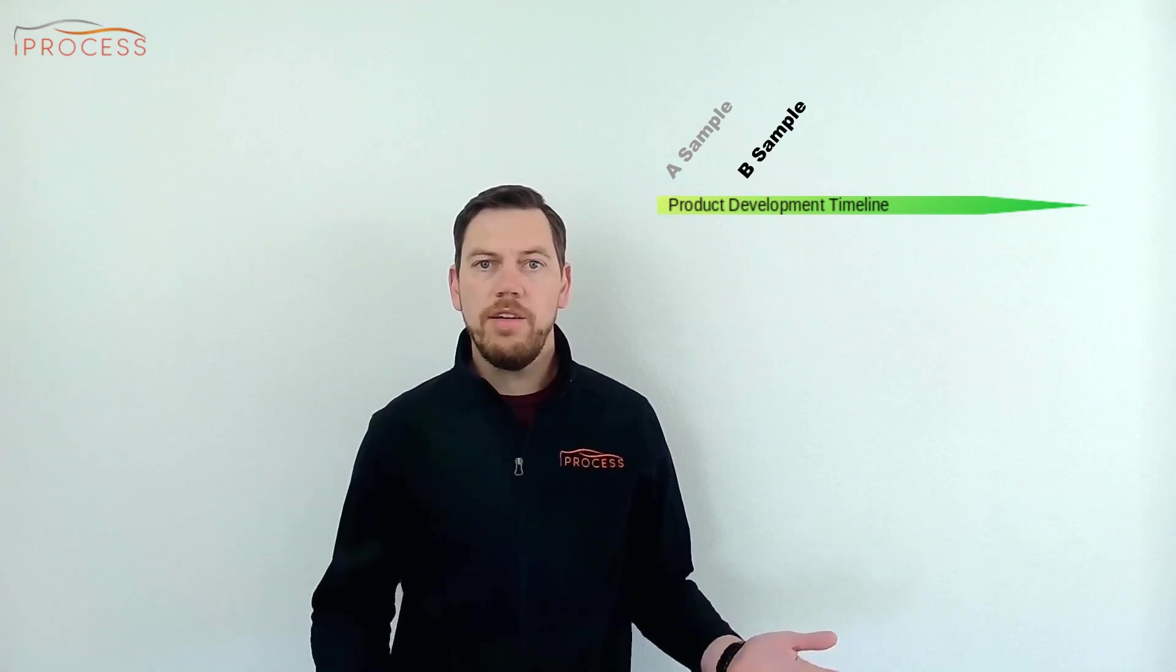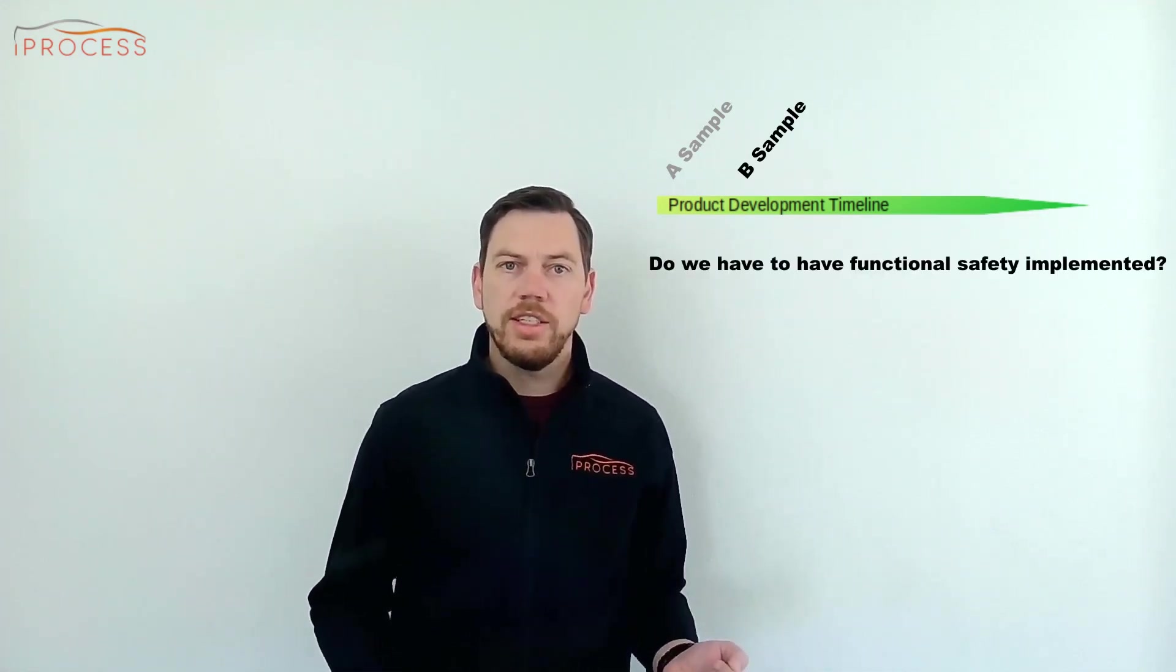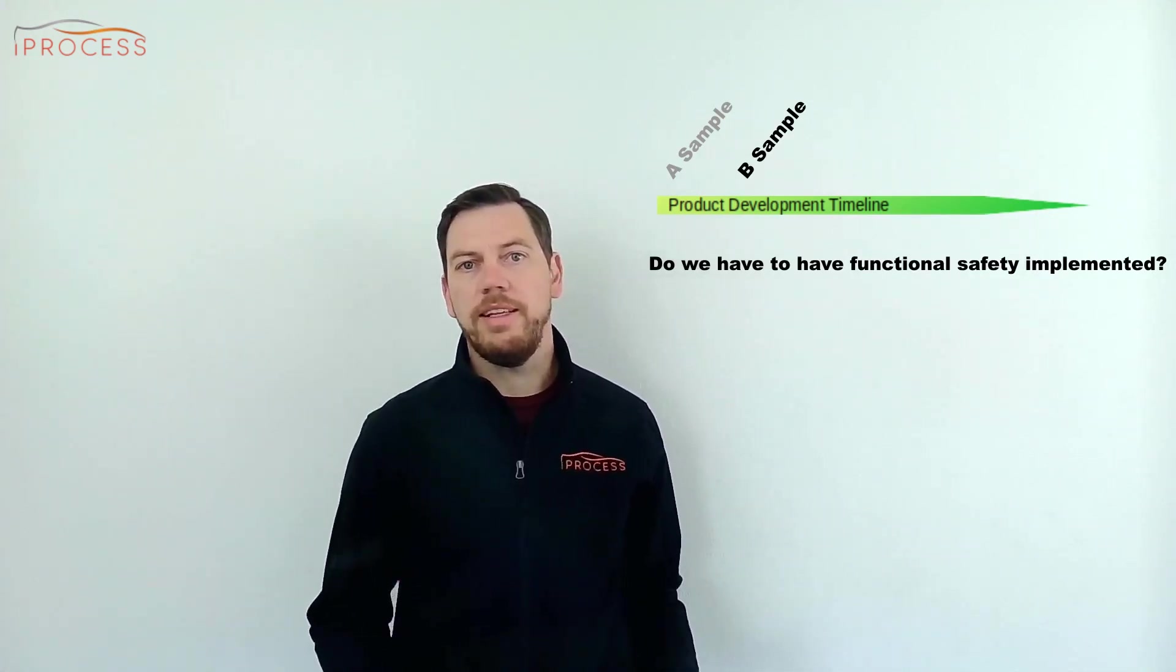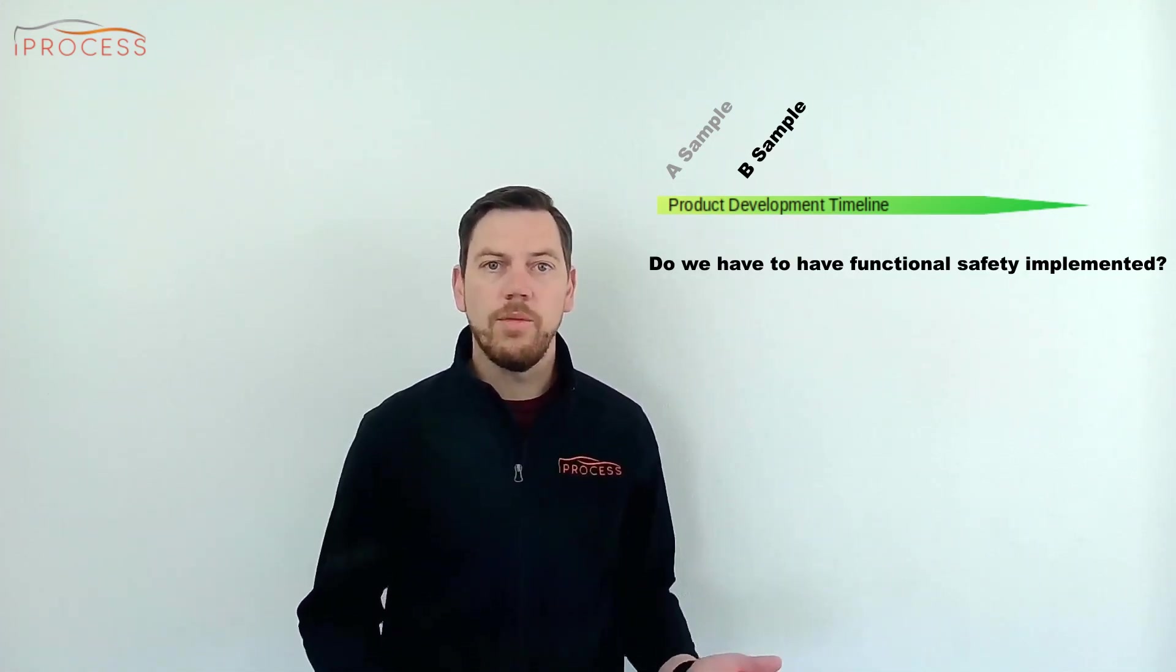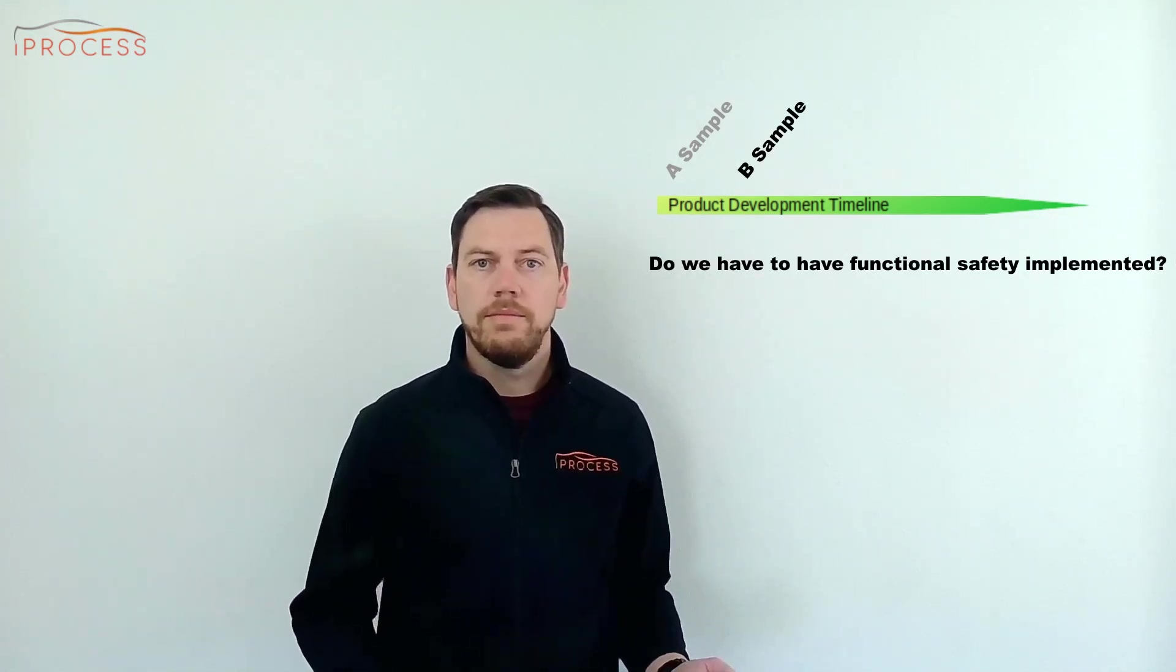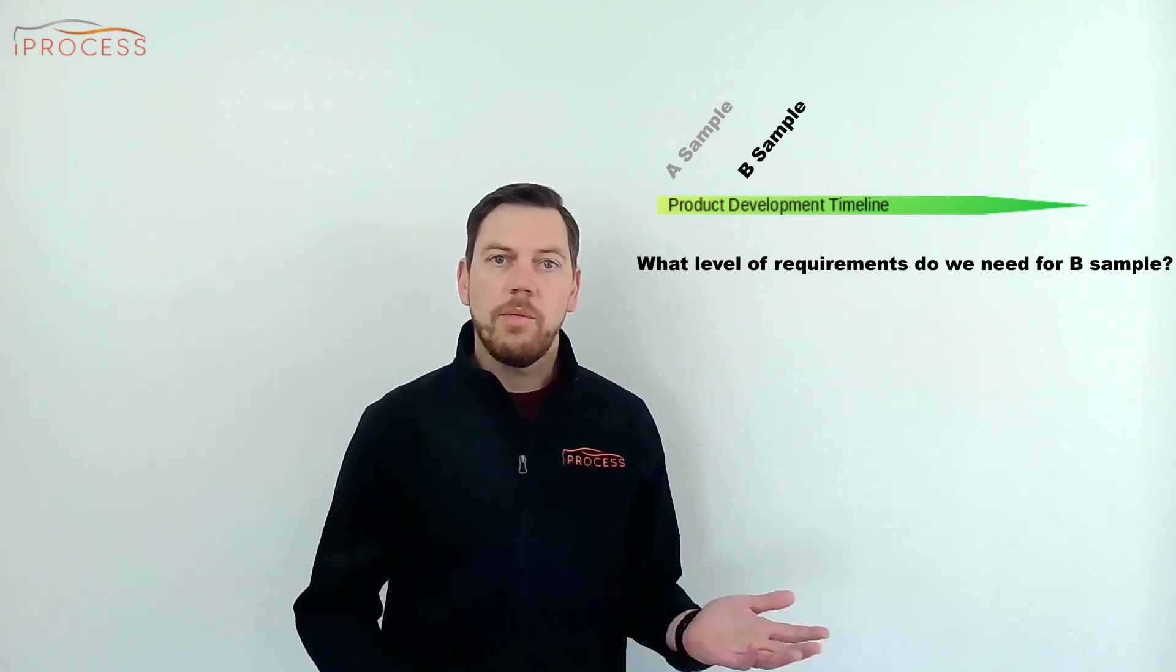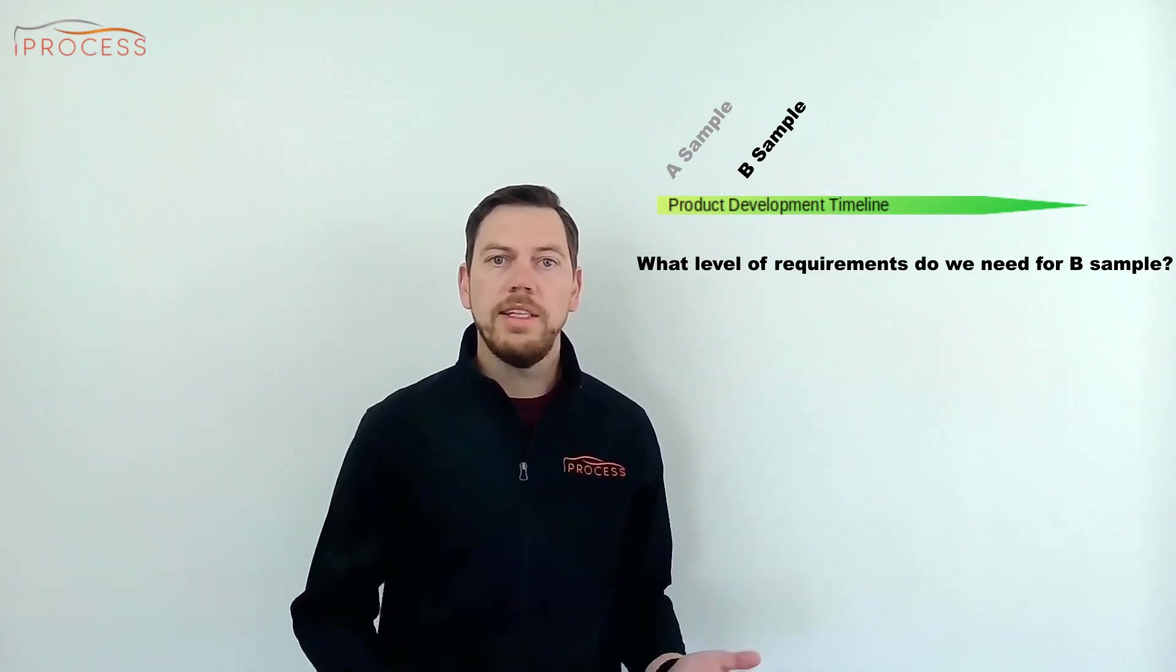Same questions as above for this stage and their answers. Do we have functional safety implemented? Yes, functional safety is going to be fully implemented by the end of the sample phase. Parameter tuning and availability improvements are usually then worked out in the C sample phase. External safety precautions stay in place. What level of requirements do we need for B samples? Requirements need to be completed on all levels, from high level over architecture and component requirements all the way to detailed design.